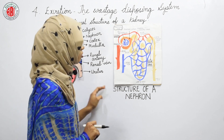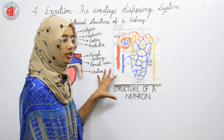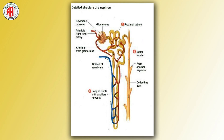So this is the structure of a nephron. When we see the structure of a nephron, we see two parts: the Malpighian body and the renal tubule. The head-like structure is called the glomerulus, and the cap-like structure around it is called Bowman's capsule. The tube-like structure — the renal tubule — is divided into three parts: proximal convoluted tubule, loop of Henle, and distal convoluted tubule.